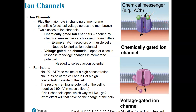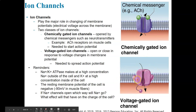Voltage-gated ion channels open up when there's a change in the electrical properties across the cell membrane, i.e., when we get an action potential. Chemically gated ion channels open up when the neurotransmitter is released, and this is needed to start the action potential — to start what's called depolarization of the cell. Voltage-gated ion channels then open once the cell has been sufficiently depolarized and reaches threshold, spreading the action potential across the whole cell, which triggers the release of calcium and muscle contraction.